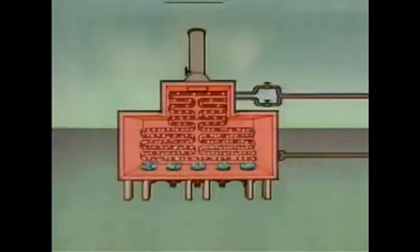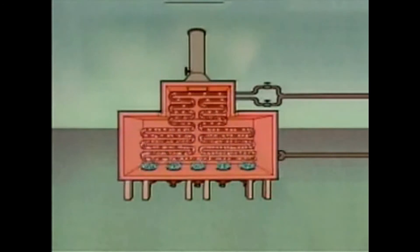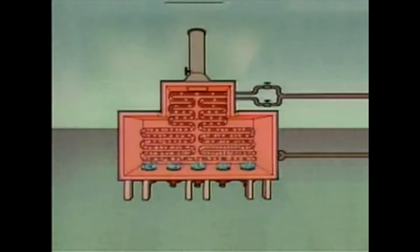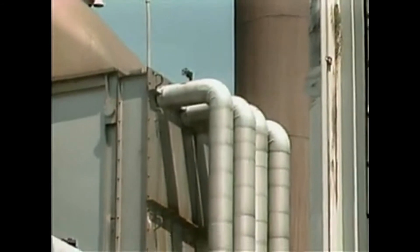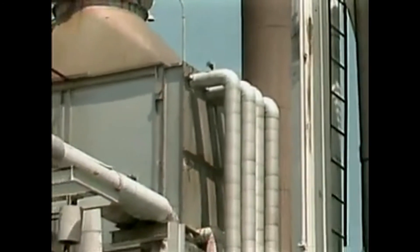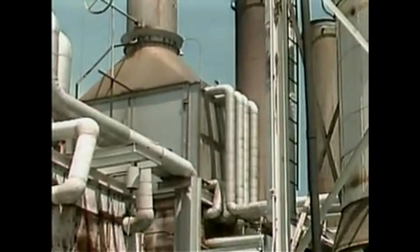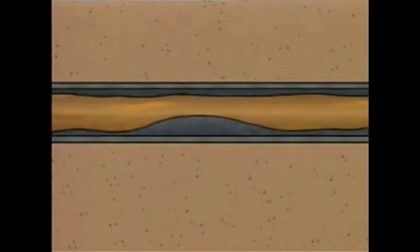In multi-pass furnaces, the flow of fluid through the tubes can present additional problems. In addition to flowing at the proper rate, the process fluid should move evenly through all of the tubes in the furnace. If the flow is not even in all the tubes, the fluid will not be heated evenly, and the temperature of the fluid leaving the furnace may not be within the specified range. Also, if the process fluid moves too slowly in a furnace, the likelihood of coking and its associated problems could increase.